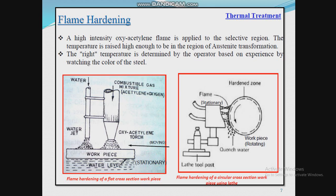There are three methods of flame hardening: the spot method, the spinning method, and the progressive method. In spot hardening, a particular region or spot on the component is heated by one or more flames and then quenched. It consists of locally heating selected areas with a suitable flame head and subsequently quenching. The heating head may be of single orifice or multi-orifice design depending on the extent of the area to be hardened.